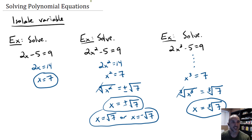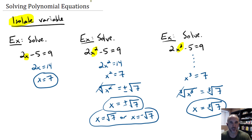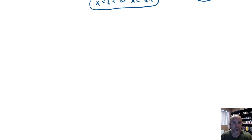So when can we use the isolate variable technique? The thing that all of these have in common is there's only one instance of our variable. We had a linear equation, a quadratic equation, and a degree 3 or cubic equation. There are no lower powers of x in addition to the one we had. So these are all good cases where you might want to isolate the variable.